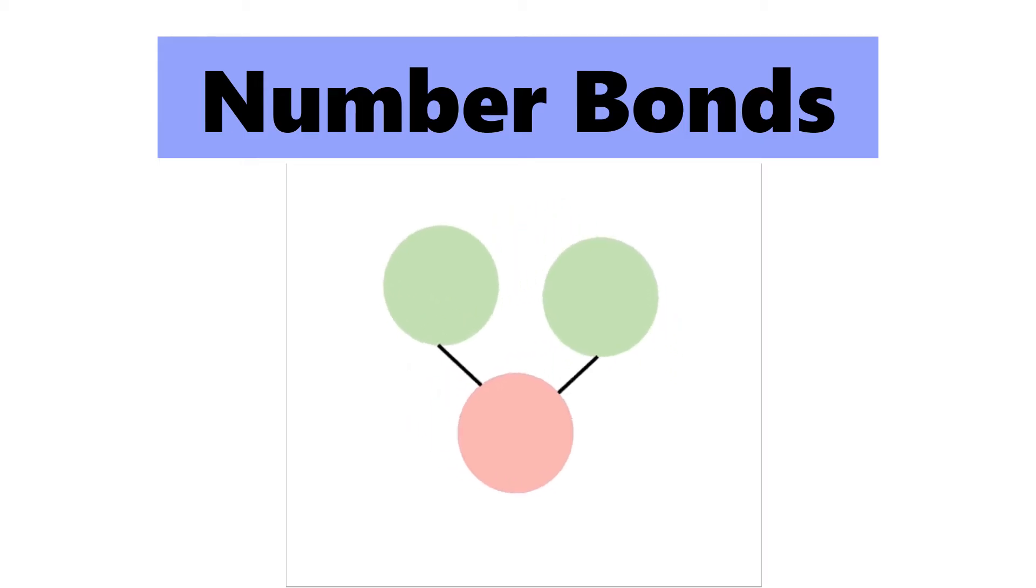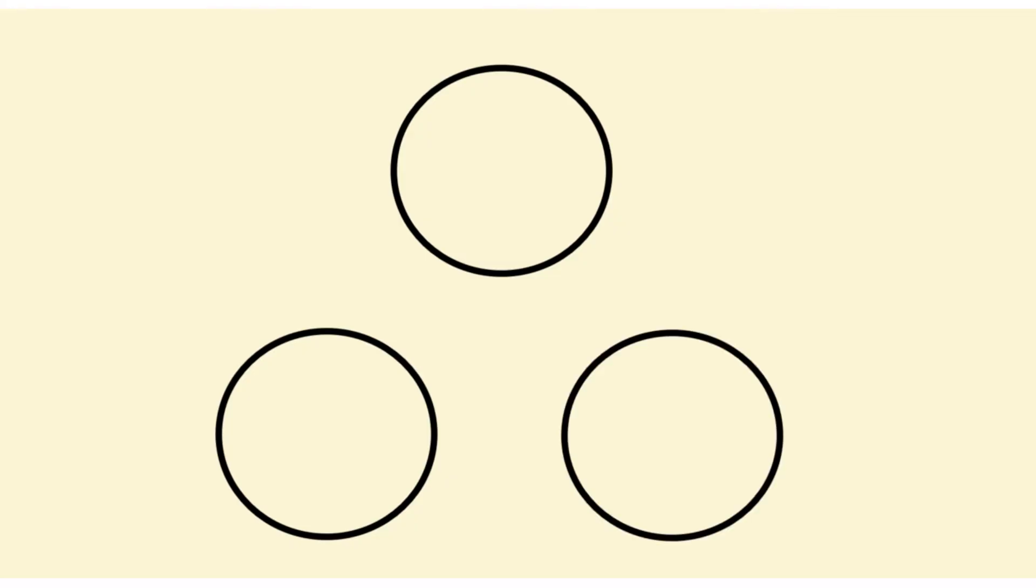Have you seen this before? A number bond is made up of three circles. Two lines join the circles together. There is one special circle that has both lines coming out from it. Do you see it?